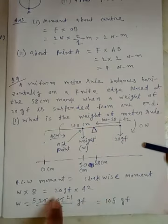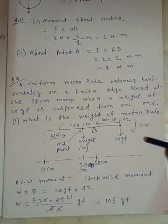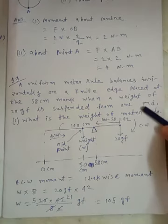So the clockwise moment will be 20 GF multiplied by 42. So the weight will come to 105 GF.